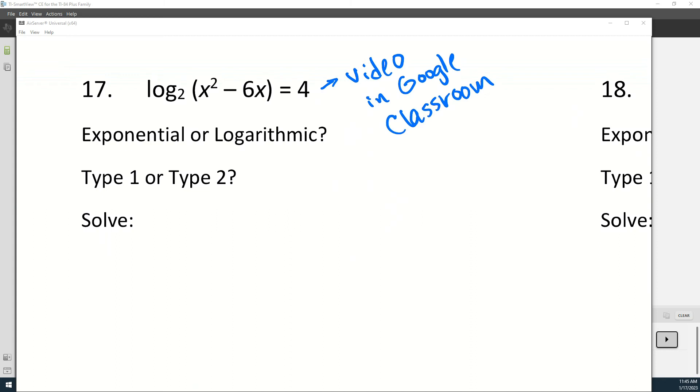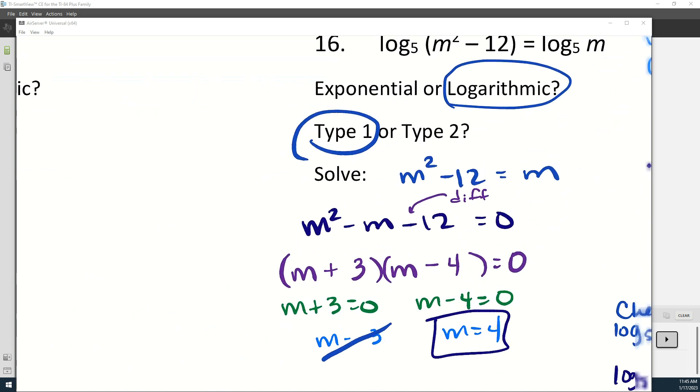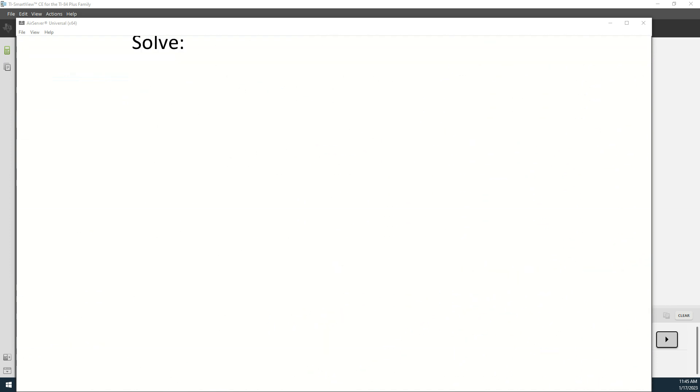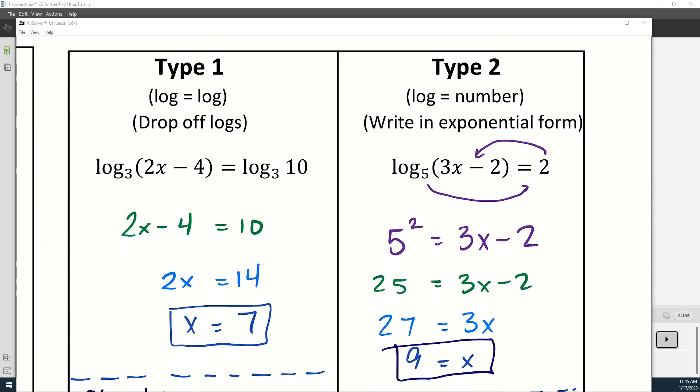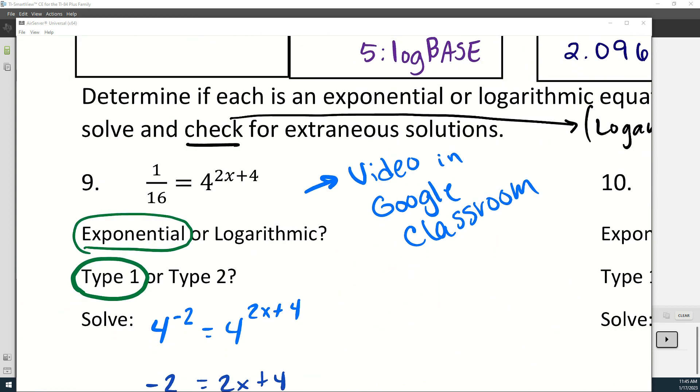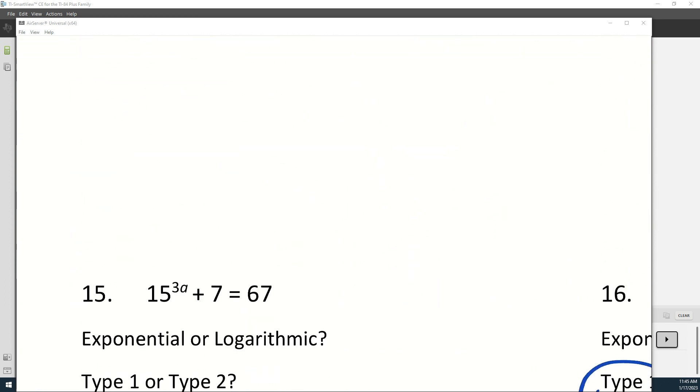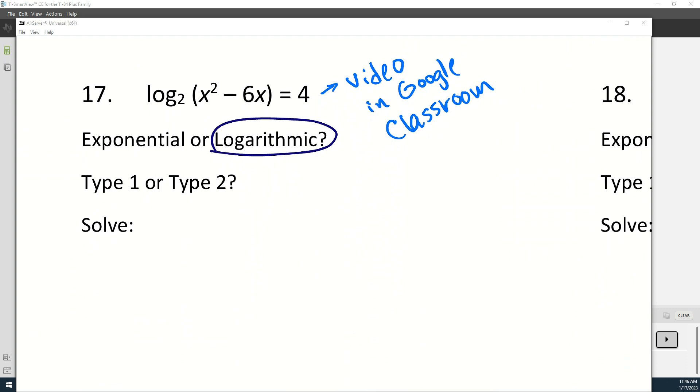For number 17, we have to decide if this is logarithmic or exponential. Because I see log right here, it's a logarithmic equation. And then we need to decide if it's type 1 or type 2. So logarithmic equation type 1 is log equals log. Type 2 is log equals a number. This one was log equals a number, so it's type 2.